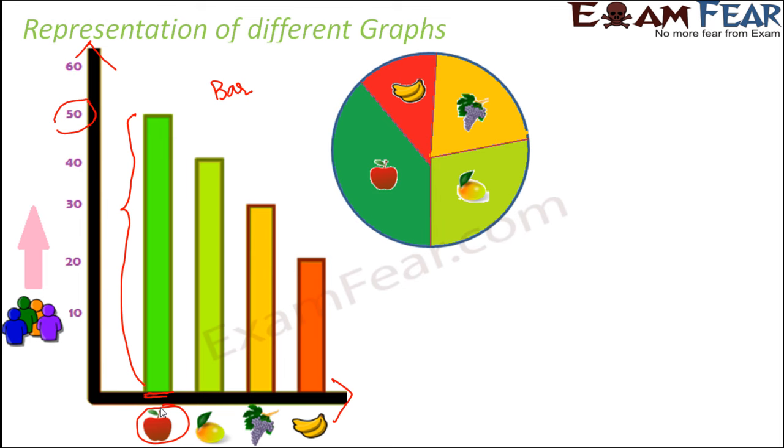When you represent the same data using a pie chart or circle graph, this is how it looks. Apple is liked by 50, meaning more than half of the people. Banana is liked by 20, and grapes by 30.